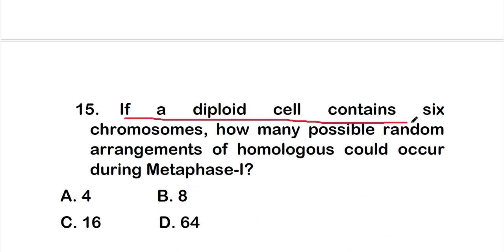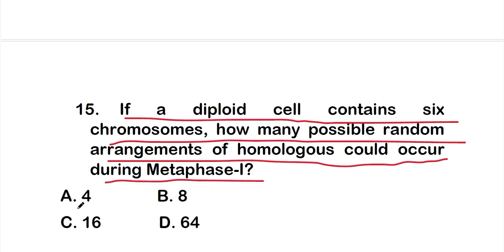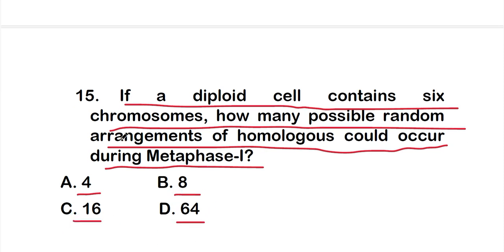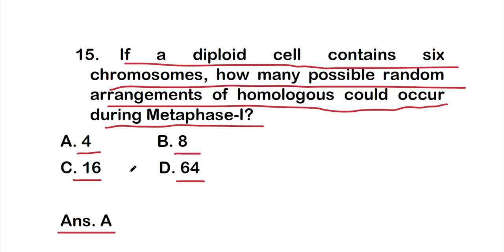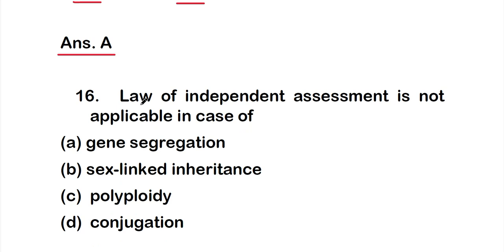Question fifteen: if a diploid cell contains six chromosomes, how many possible random arrangements of homologs could occur during metaphase I? Options: A: 4, B: 8, C: 16, D: 64. The right answer is option A, that is 4.